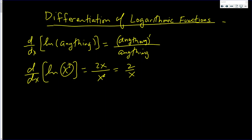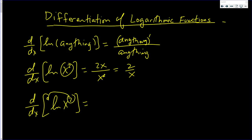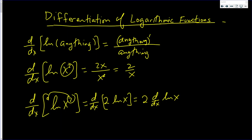Now, derivatives are really friendly. I want to do this problem one more time. Logs say we can bring the power down. So it becomes the derivative of 2 ln of x. The 2 gets multiplied by the derivative of ln of x. The derivative of ln of anything — you put the anything in the bottom and its derivative on top. 2 times 1 is 2 over x. The derivative of x is 1.